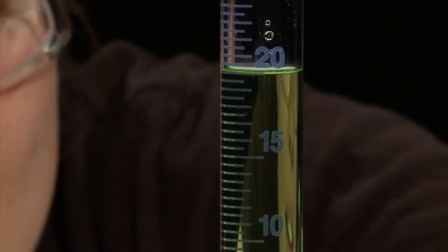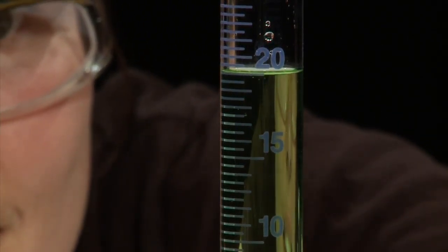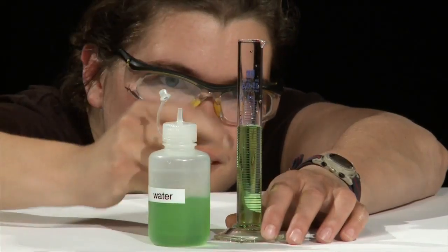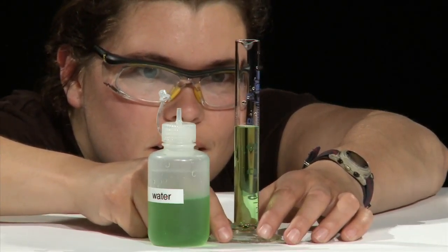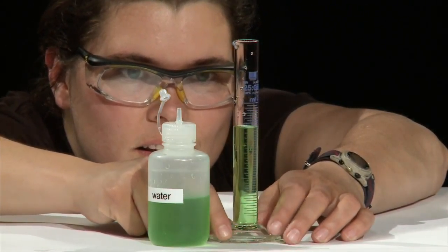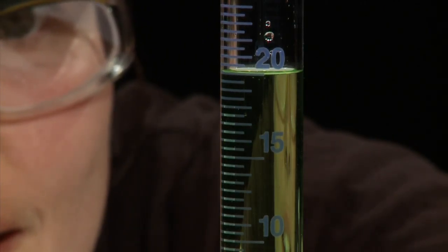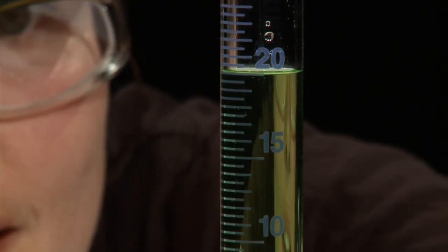Notice how the surface of the water is curved. The curve is known as a meniscus. In order to accurately measure out 20 milliliters, you must ensure the bottom edge of the meniscus is touching the 20 milliliter line.